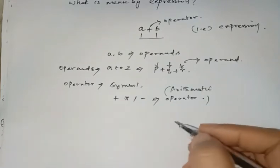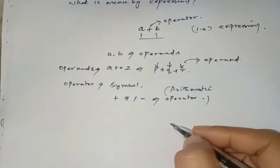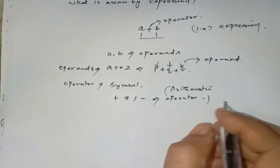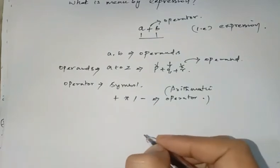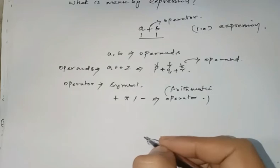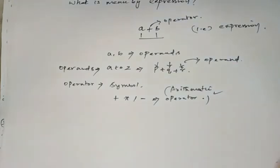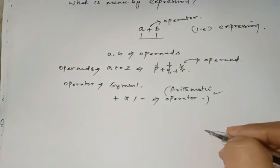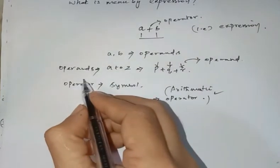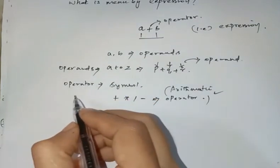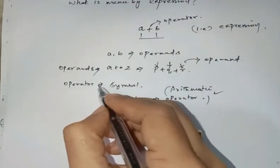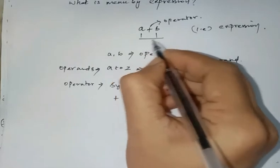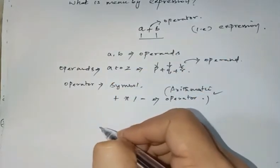We use arithmetic operators in our expressions. We can also use logical operators or conditional operators, but mostly we use the arithmetic operator. Now we know what an operator is, and we know the meaning of these two things — operands and operators. We can now define an expression.